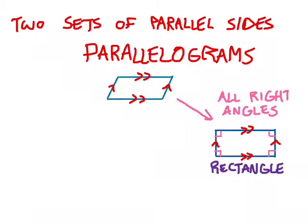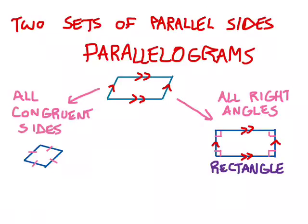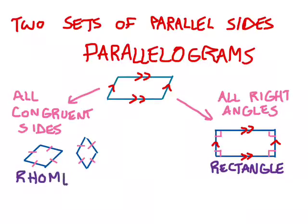Rectangle, by the way, means right angle — 'rect' means right angle. On the other hand, we might see a parallelogram that has all congruent sides. Here I see a parallelogram where all the sides are the same length. It's not a rectangle; it doesn't have any right angles. Kids sometimes mistakenly call this a diamond, and in fact a diamond is a type of this — it's called a rhombus. That's the official math name for a diamond. It's just a parallelogram with all congruent sides — every side is the same length, not just two, but all four.